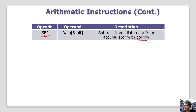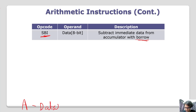Subtract Immediate with Borrow. B has been very much considered. The accumulator data is much greater than the current length.